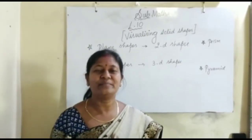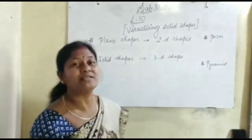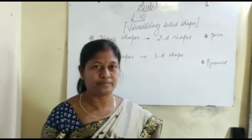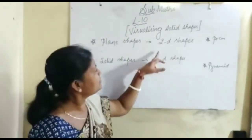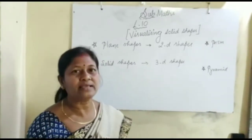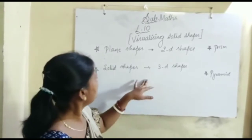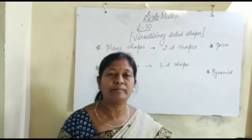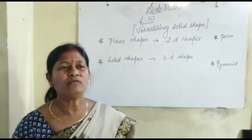Good morning dear children. Today the point of discussion is 'Visualizing Solid Shapes,' lesson number 10. In our day-to-day life we see various kinds of shapes — solid shapes and plain shapes both. Examples of 2D shapes are rectangle, square, triangle, parallelogram, trapezium, and so on. We also see various kinds of 3D shapes, for example prism, parallelepiped, cube, cuboid, and so on.